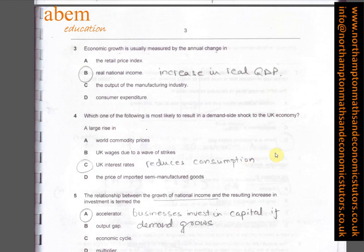In question four, which one of the following is most likely to result in a demand-side shock to the UK economy? The answer is UK interest rates. If they increase, that will reduce consumption as households and firms will borrow less. For example, households wanting to buy a car will postpone it because installments will be higher, and firms will also postpone investment for the same reason.